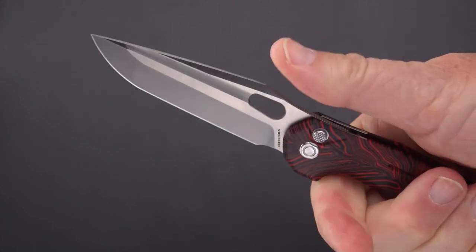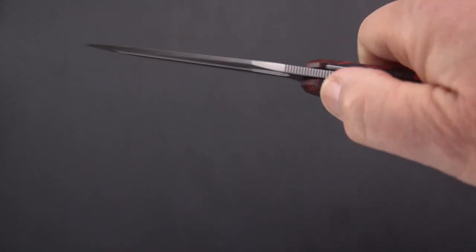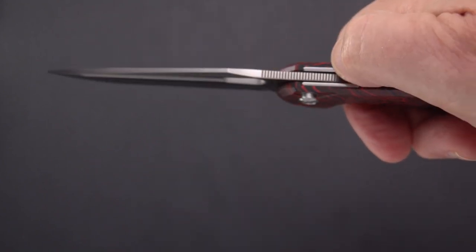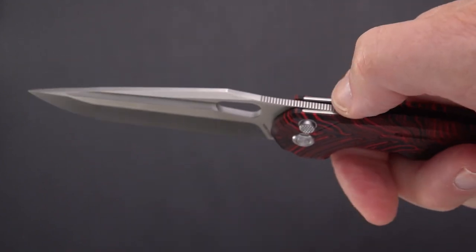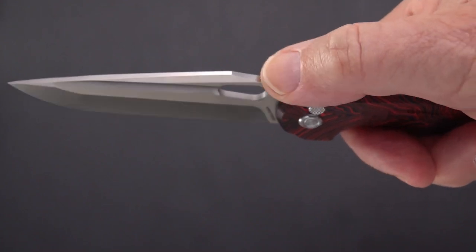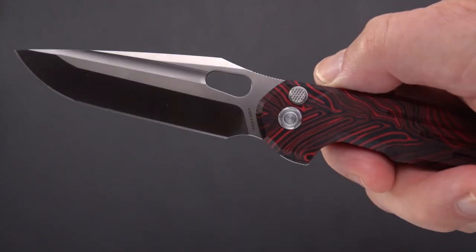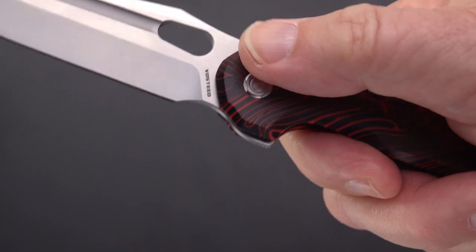We've got a very nice finger choil here, nice jimping, gripping. I can place my thumb all the way out on that ramp but the jimping runs about two-thirds of that ramp and is like three quarters overall. Nice jimping, right on the button.